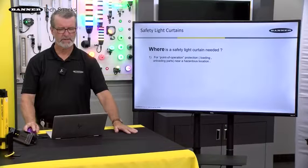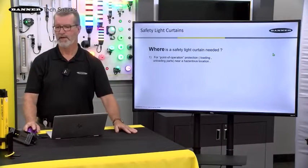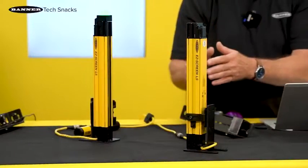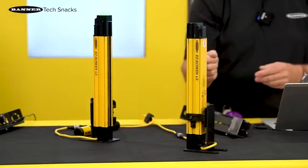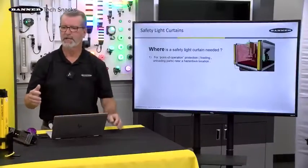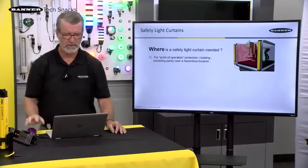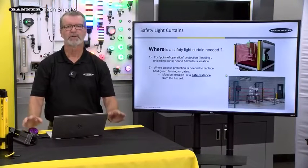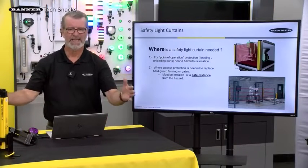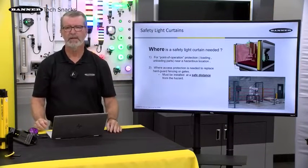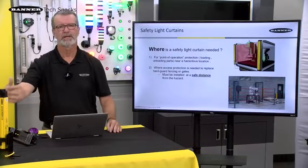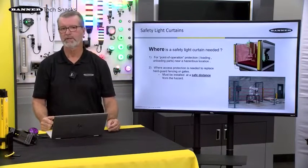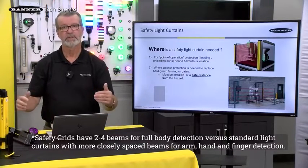Where is the safety light curtain needed? It's used at the point of operation, which means you need to be in front of the light curtain to load parts, pull them out, so you need that protection to shut things down as you do that until you clear the curtain again. Otherwise, there's access protection for areas that are much larger, where instead of guards or gates or doors, you need that open area to get inside and outside with pallets or whatever the case may be. This is where grids are typically used, and we need to know that we're at the correct safety distance.